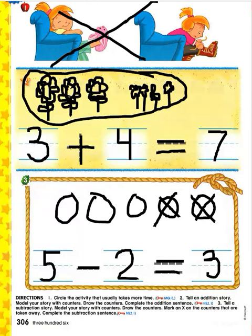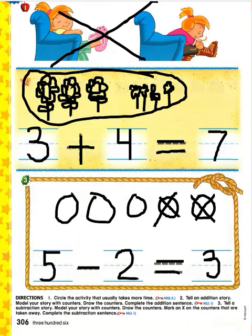Does yours look something like mine? Five take away two is three left over. Five quarters fell on the floor, then a girl picked up two, so we should have taken away two. And that would leave three quarters on the floor. Five take away two is three.